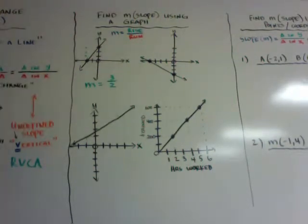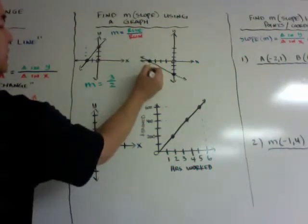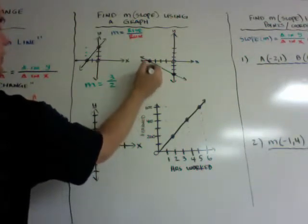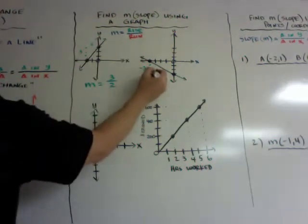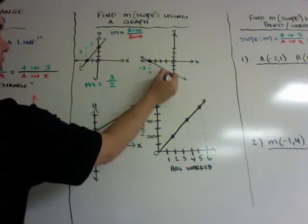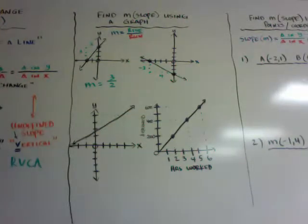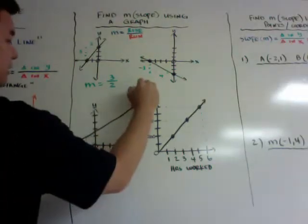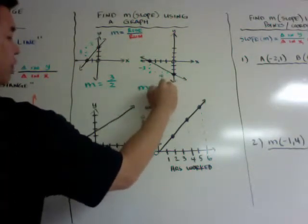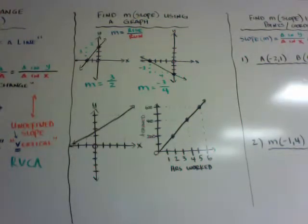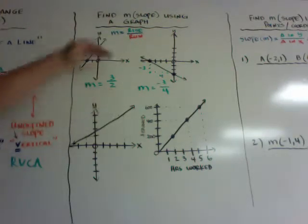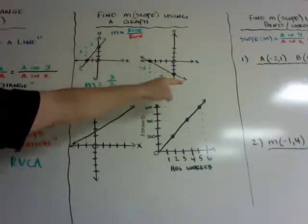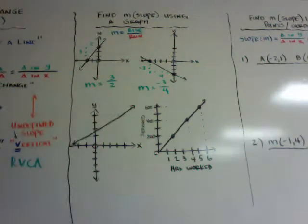Here's another example. My rise — I'm going to go down 1, 2, 3, so I went down negative 3. And then I go over 1, 2, 3, 4, so I went over 4. My slope is going to be negative 3 over 4. You can also do a visual check: a positive-sloping line should give a positive slope, and this line going down to the right is a negative-sloping line, so my slope should be negative — which it is.